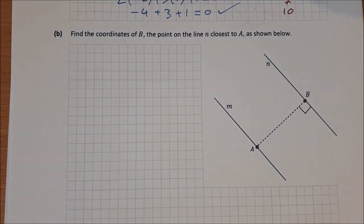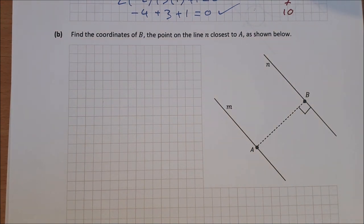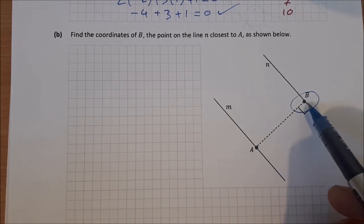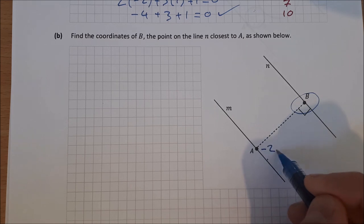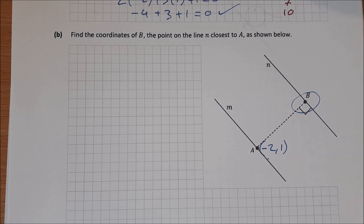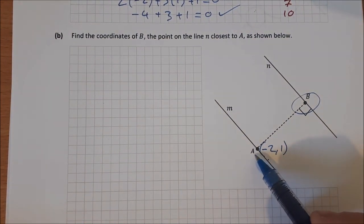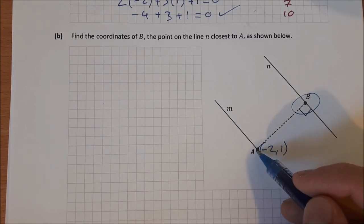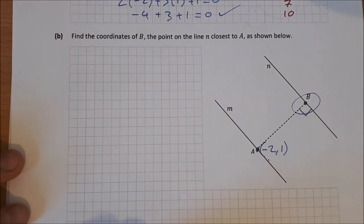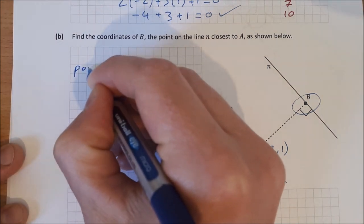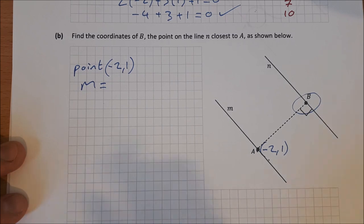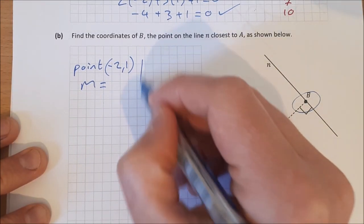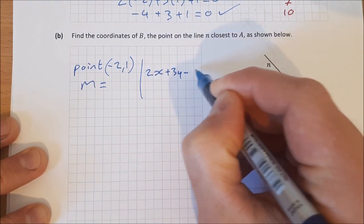Find the coordinates of B, the point on line n closest to A(−2, 1). We need the equation of line AB. AB is perpendicular to n, passes through A(−2, 1), and we need the slope of n to find the perpendicular slope.